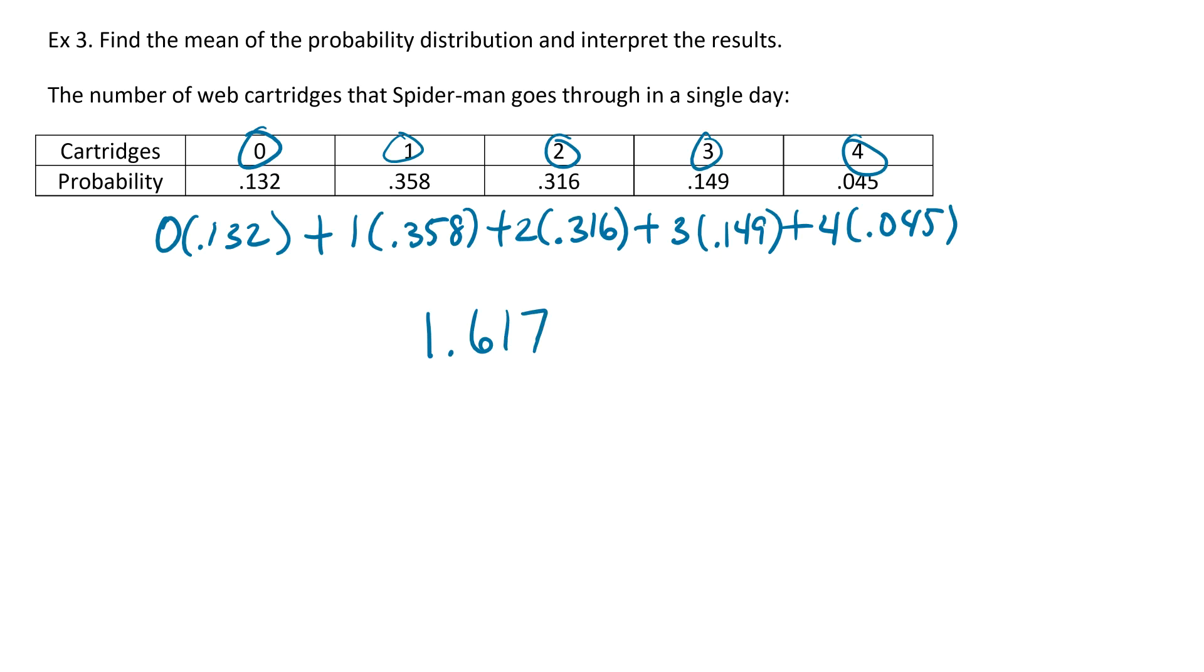Now here's what that actually means. It means that in a single day, Spider-Man, on average, is going to go through 1.617 web cartridges. So 1 and about two thirds of a second one. That's what the mean of a probability distribution does. It takes essentially the average. On a normal day, how many will he go through? Sometimes he won't go through any. Sometimes he'll go through 4, which is much larger than what we have here. But on average, he's going to go through about 1.6 web cartridges in a single day. That's what the mean does. It just finds an average.